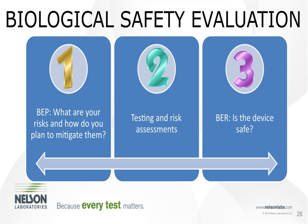In summary: Step one is a biological evaluation plan — identify your risks and how you're mitigating them, and remember it's not a checklist approach. Step two is testing and risk assessments — perform the testing and do risk assessments where necessary. Dr. Campbell pointed out the price and time benefits of extractable and leachable testing with risk assessment versus all animal testing. Step three is the biological evaluation report — identify if your device is safe. Do not leave room for assumptions for reviewers, as they simply won't make them. Make your justifications and support biological safety through to the end.